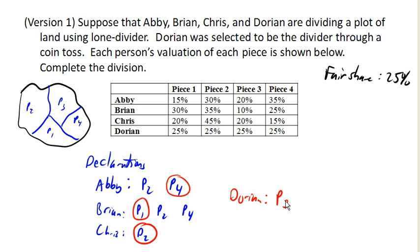The unclaimed piece gets piece three. And all four players end up with a piece that they value as a fair share. It may not be their favorite piece, but it's a piece that they value as a fair share.